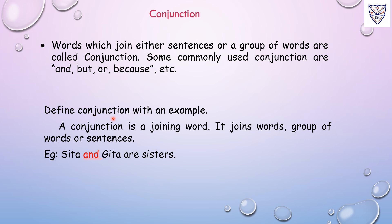Define conjunction with an example. A conjunction is a joining word. It joins words, group of words, or sentences. Example: Sita and Gita are sisters.